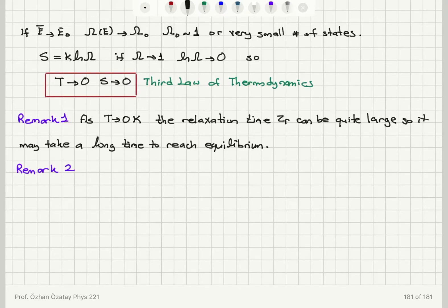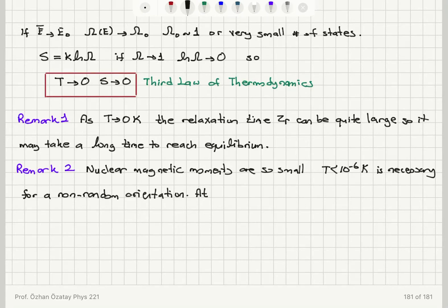So in terms of experimental measurements, this would be one concern. The other one is the second remark. If you look at nuclear magnetic moments, they are very small. They are so small that for temperature less than micro Kelvin, 10 to minus 6 Kelvin is necessary in order to go to a non-random orientation. Therefore, if you look at more readily available temperature, 10 to minus 3 Kelvin, this can be easily achieved using adiabatic demagnetization technique, for example.